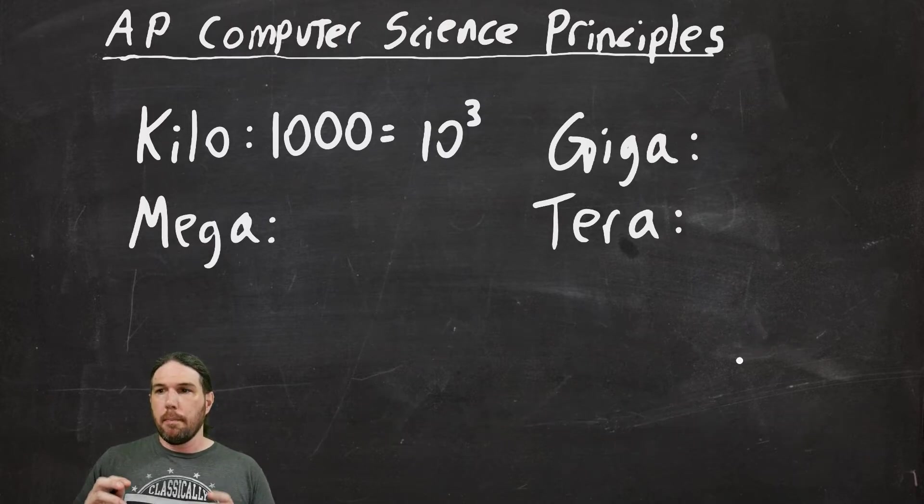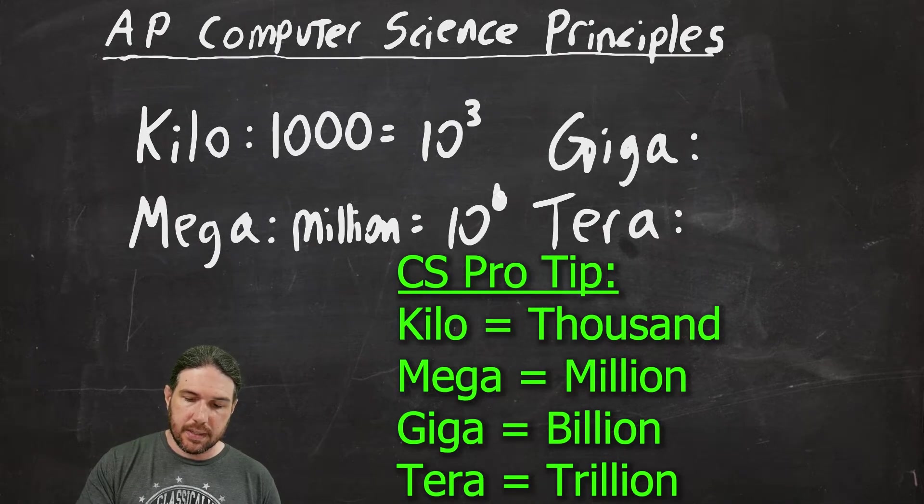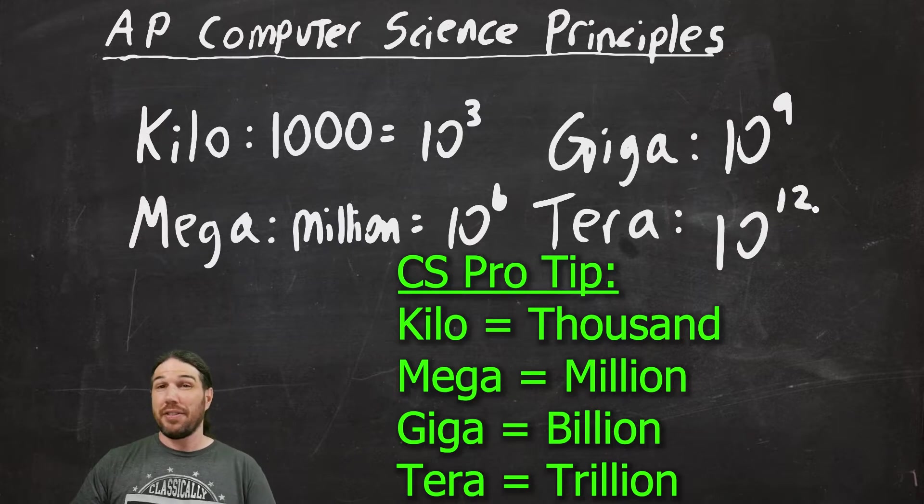Now, mega, giga, and tera have their own metric definitions. Mega is million, which is ten to the sixth. Giga is ten to the ninth power. Tera is ten to the twelfth power. However, this is not how I remember these things.